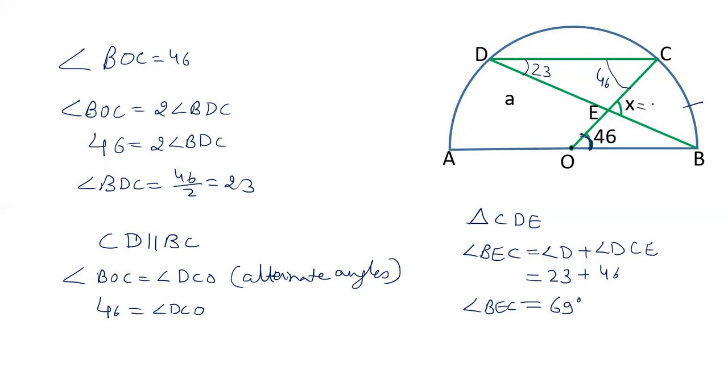So friends, the value of X is 69 degrees. A simple question which is applying the theorem that the angle at the center is twice the angle at the circle. I hope you liked this video. Please like our videos and subscribe to our channel.